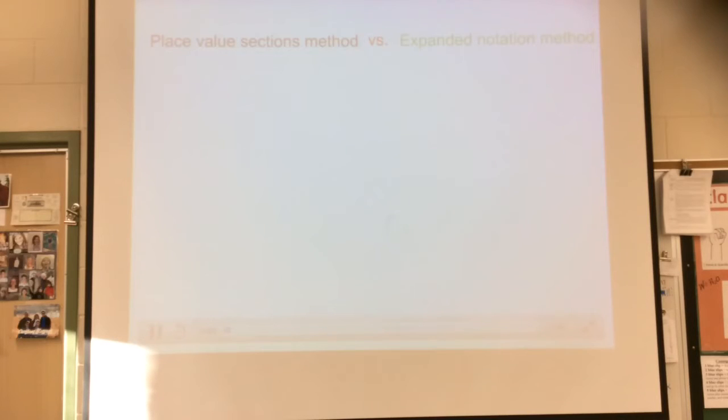Okay, today we'll be talking about two different methods we've been learning for long division. Now for both the place value sections method and the expanded notation method, we start the same way, 7722 divided by 3.